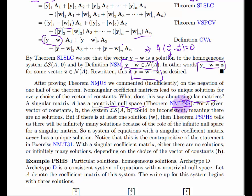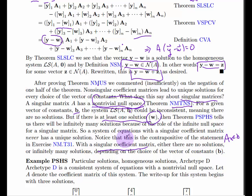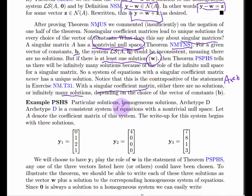For a given vector of constants B, the system LS(A,B) could be inconsistent — meaning no solutions exist. But if there's at least one solution, then since there's a non-trivial null space, we can take any solution and add a null space vector to get another solution. So with a singular coefficient matrix, either there are no solutions to AX equals B, or there are infinitely many solutions — you can't have exactly one.